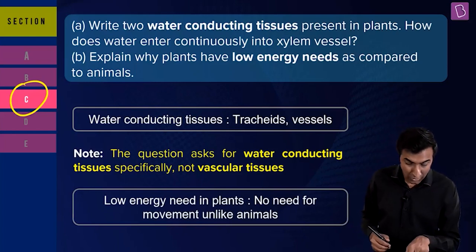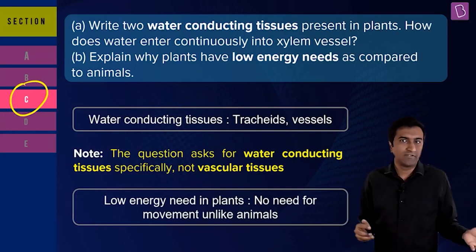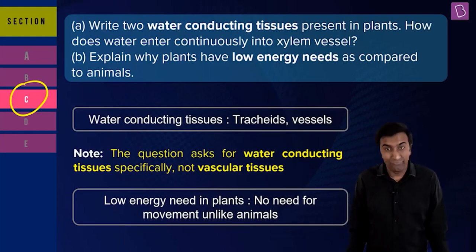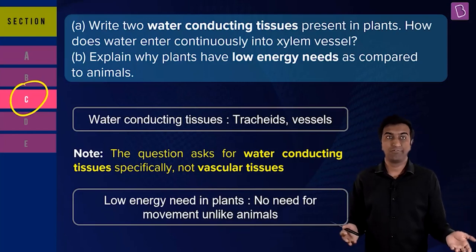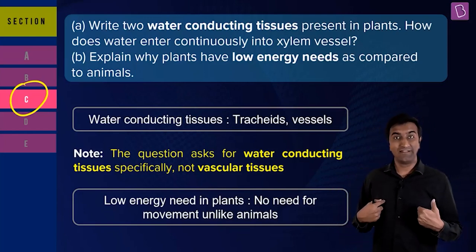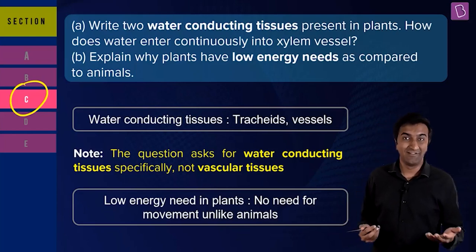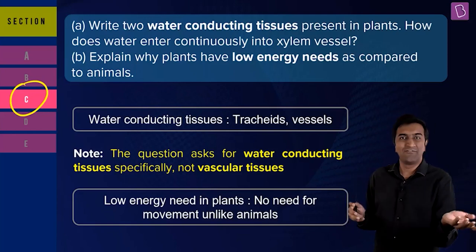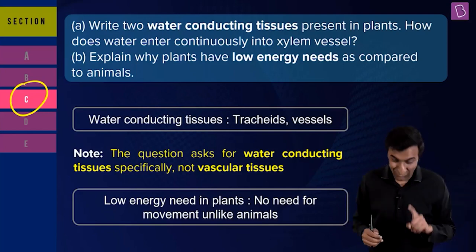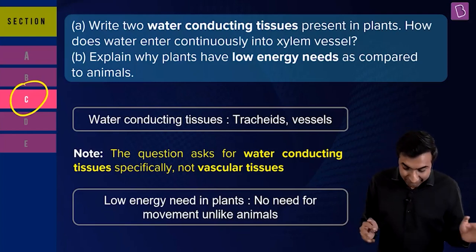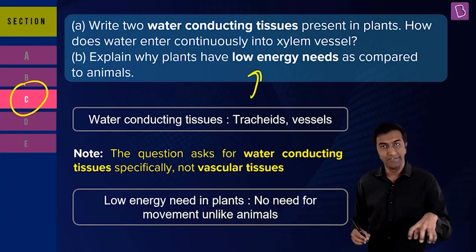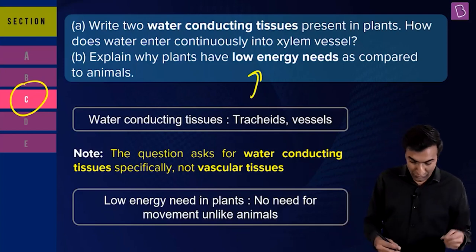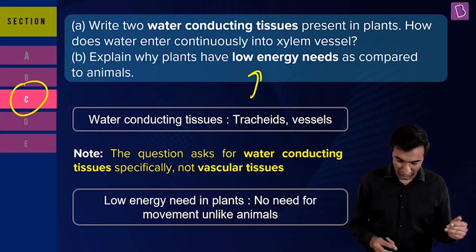The last part — plants have low energy needs because they're fixed; they don't have to move around. They get all their food directly from the roots and from the air through photosynthesis. We humans, on the other hand, are pretty active — and we sleep for about one third of our lives. The idea of low energy needs comes from plants being stationary and getting their nutrition from air and soil.